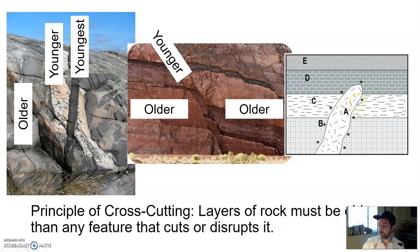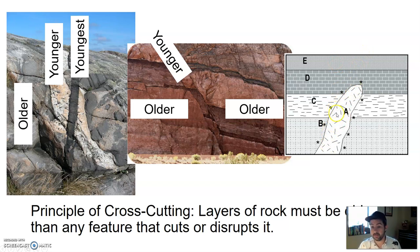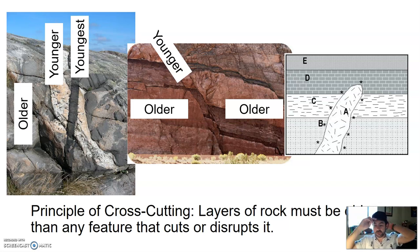A correct order from oldest to youngest might be B, C, D, E, A — or alternatively, it could be B, C, D, A, E. Without more information, we can't say for sure which of these last two is correct, only because A doesn't cut all the way through E. Maybe A is the youngest and the magma stopped there, or maybe layer E came on later. The exact order we can't be 100% sure on, but we can get pretty close.